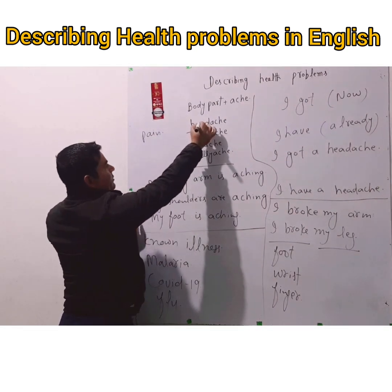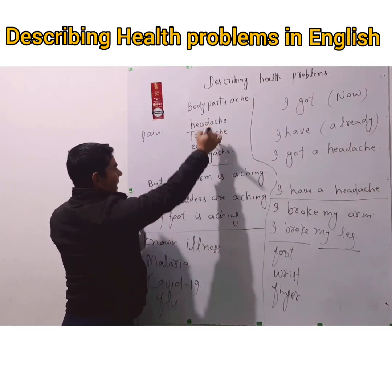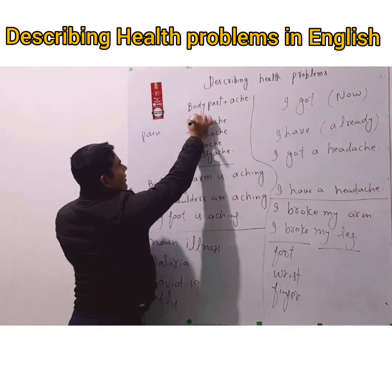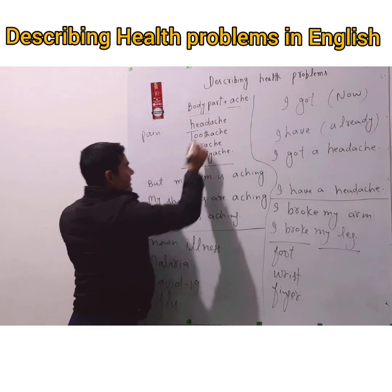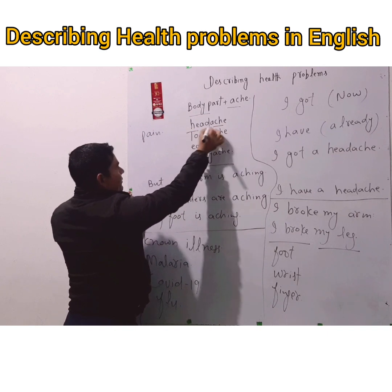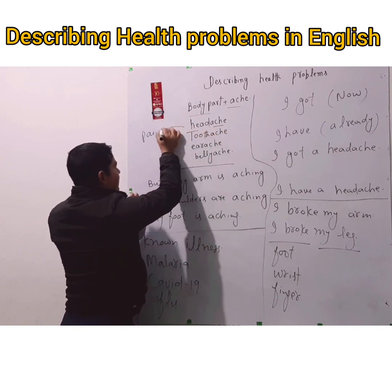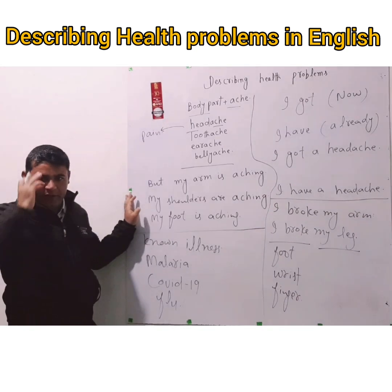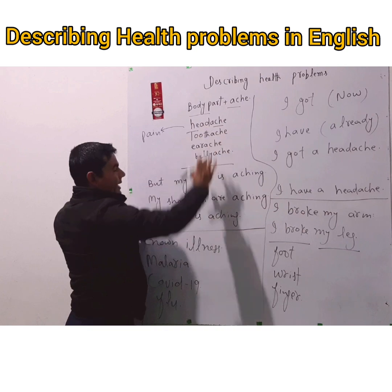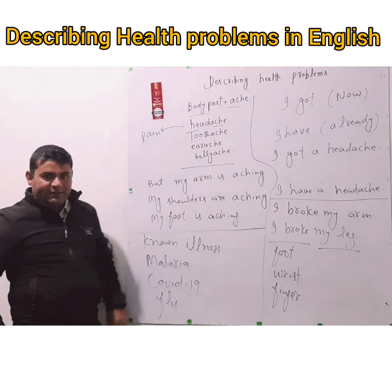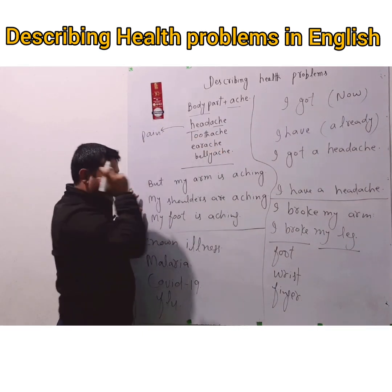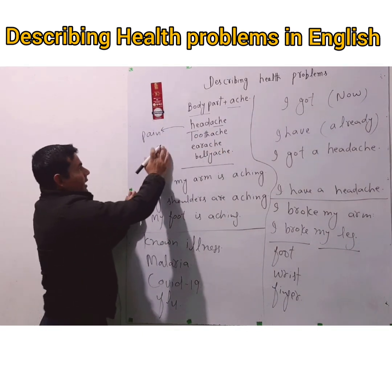God forbid, I don't want you to have a health issue, but you can talk about them. For example, we talk about body pain. If you have pain in a certain part of the body, you say body part plus '-ache.' Head is the body part, and when you use '-ache' with it, it becomes the pain of that body part. So you say 'I have a headache' — meaning I have pain in my head.